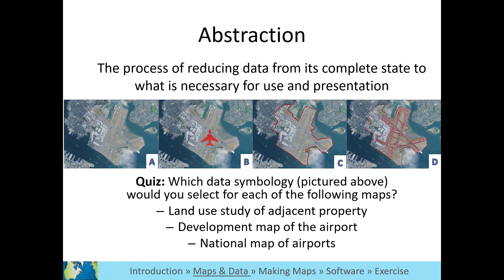Finally, which data symbology would you select if you wanted to create a map of all airports in the country? B. Because it just shows the airport as one symbol. If you use the symbols pictured in C or D, your map would be messy and difficult to read.